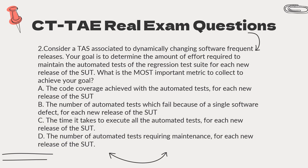A. The code coverage achieved with the automated tests for each new release of the SUT. B. The number of automated tests which fail because of a single software defect for each new release of the SUT. C. The time it takes to execute all the automated tests for each new release of the SUT. D. The number of automated tests requiring maintenance for each new release of the SUT. Answer: D.